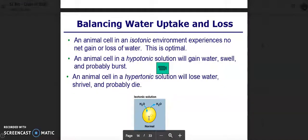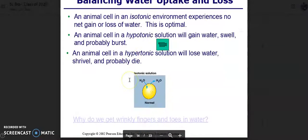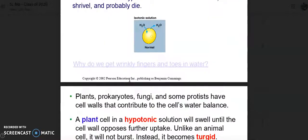If we're balancing water uptake and loss, an animal cell in an isotonic environment experiences no gain or loss of water, and this is optimal. An animal cell in a hypotonic solution will gain water, swell, and probably burst. An animal cell in a hypertonic solution will lose water, shrivel, and probably die.